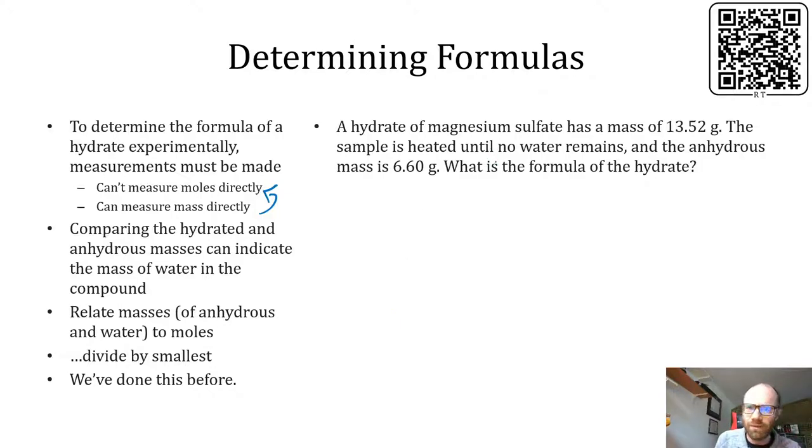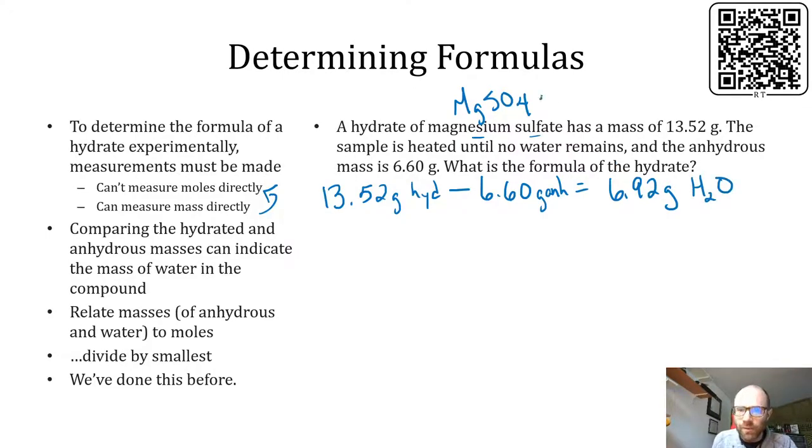So here's a sample problem. Like I said, pause if you want to do this yourself. Magnesium sulfate. We're going to need to translate that into a chemical formula. The magnesium's a plus 2, the sulfate's a minus 2. We see 13.52 and 6.60 is the anhydrous. So the difference between them would be the amount of water, which in this case would be 6.92 grams of water. So again, our general formula is going to be this. We're looking for the N and there's going to be a 1 understood in front of our anhydrous. So we're looking for a 1 to N ratio of moles. While we have the mass of the anhydrous and the mass of the water, we should convert both of those to moles.